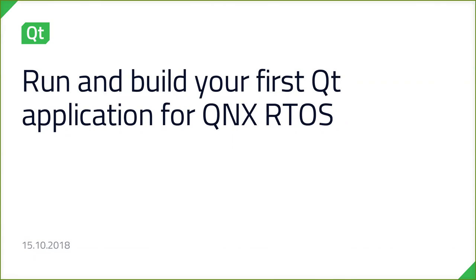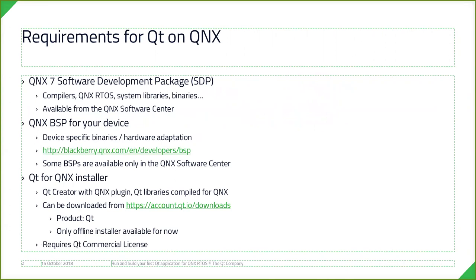What you need first is the QNX 7 Software Development Package, available from the QNX Software Center. It contains QNX compilers, the RTOS OS kernel, system libraries, and some binaries you need for running Qt. The second item is the QNX Board Support Package for your specific device, which has configuration for the hardware you're running on. Some of these are available from the QNX Software Center and some are available on the QNX website.